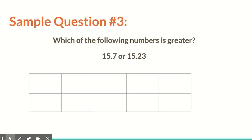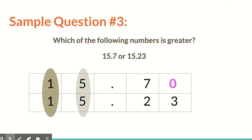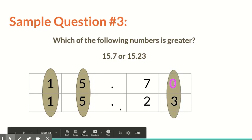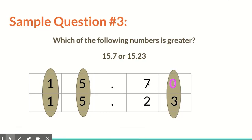Let's look at our final sample question: which of the following numbers is greater — 15 and 7 tenths or 15 and 23 hundredths? We cannot just think 23 is larger than 7 so it must be 15 and 23 hundredths. Our first step is always to line up our numbers by the decimal point. We can add in that placeholder zero — it does not change the value of the number. Then we start from our left side. Both numbers have a 1, so that doesn't help. Next, the ones place — both 5s, no difference. Then we look at the tenths place: the 7 and the 2. The 7 tenths is larger, so therefore 15 and 7 tenths is the greater number.